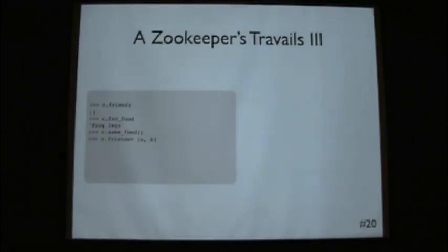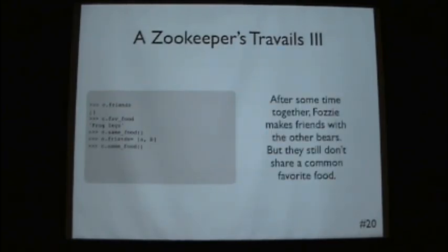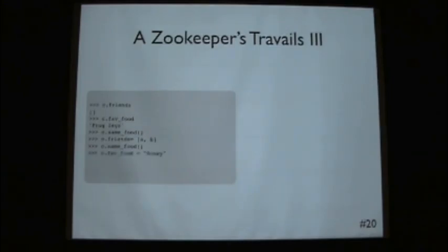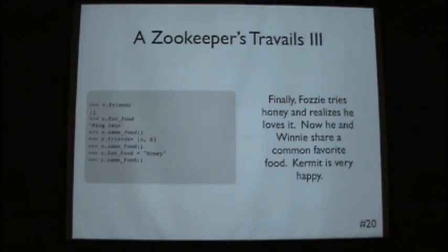Okay. What if Fozzie made some friends. So now both Winnie and Yogi become friends with Fozzie. But still none of them like the same food. But over time Fozzie acquires a taste for honey, because honey is better than frog legs. Kermit is very happy. And so when we do C dot sameFood, both Fozzie and Winnie both like honey. So we can modify the attributes. So the list of friends as well as favorite foods. And when we rerun these methods, the same methods, we can get a different output.